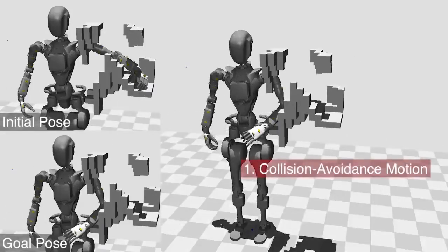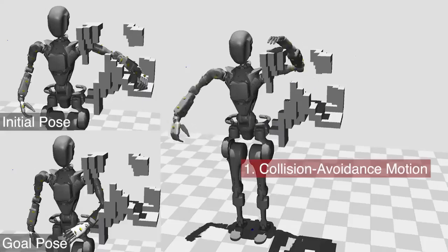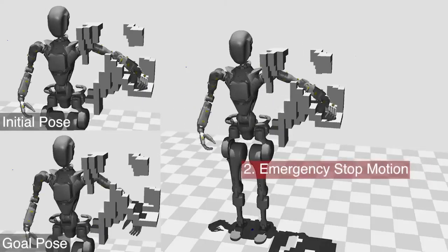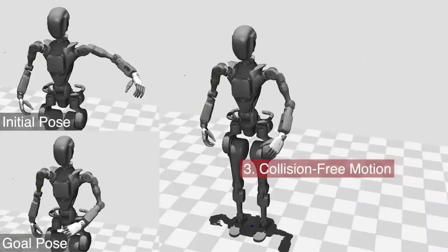We generate tight obstacles around this human motion and use it for collision avoidance training. We also include emergency stop and collision-free motions to maintain diverse situations.